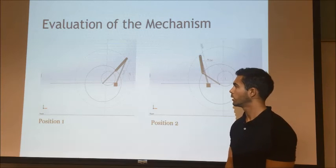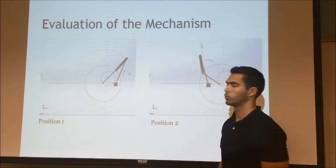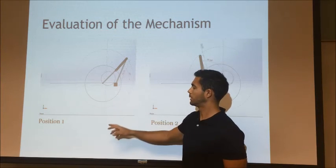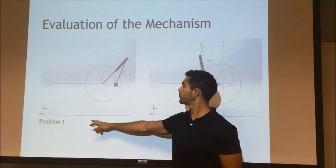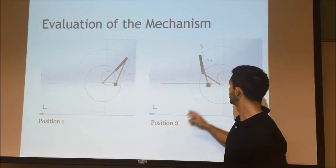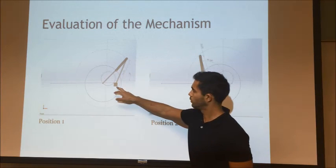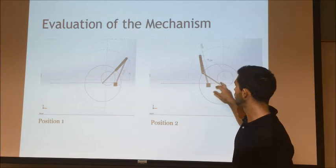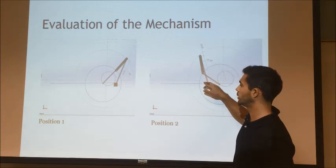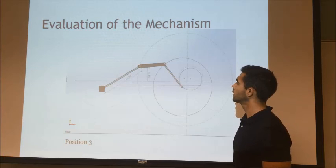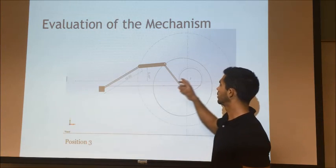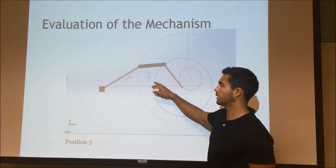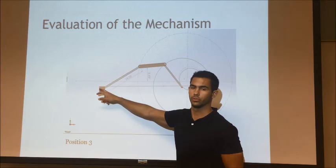Now this is our system showing, for simplicity's sake, the A-B bar at the different positions. This would be position 1 with its angle, position 2 with its angle, and also the position of the slider. This would be C1, this would be C2, and the angle AB does with the X axis. And here, the final position 3, the angle the AB bar does with the X axis, and then the slider crank at position C3.